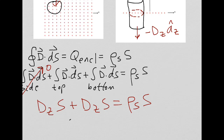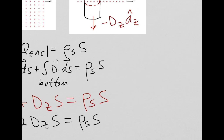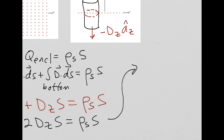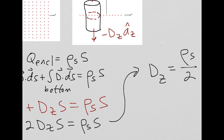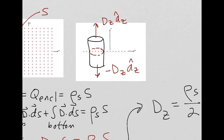So we have two d_z times S equals rho sub s times S. Dividing both sides by 2S, we get the electric flux density component in the z-direction is equal to rho sub s over 2. Notice there's no dependence on the coordinate z here. So it doesn't matter where we placed our cylinder — in other words, it doesn't matter what the length of our cylinder was — we would get the same result. This tells us that d sub z is independent of the coordinate z.